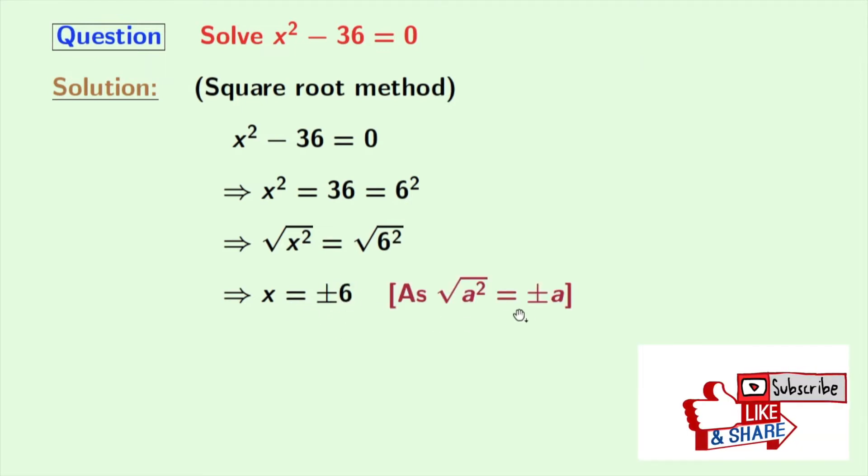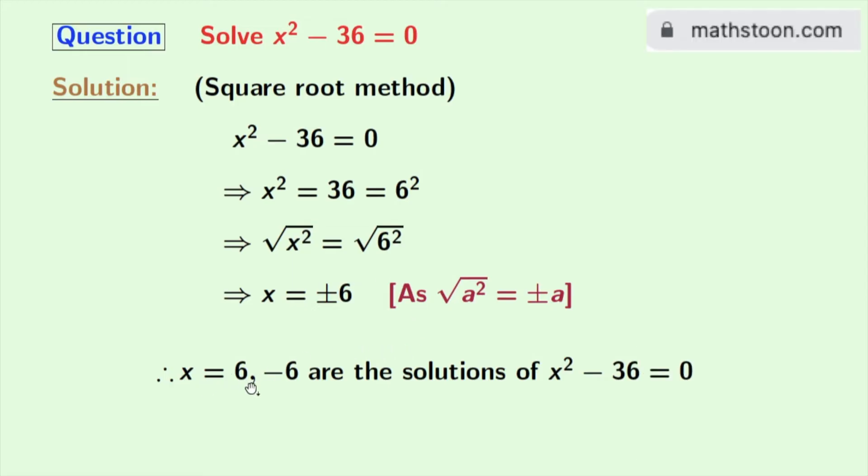As we all know that square root of a square is equal to plus minus a. Here a is 6, so x is equal to 6 and minus 6 are the solutions of the equation x square minus 36 is equal to 0.